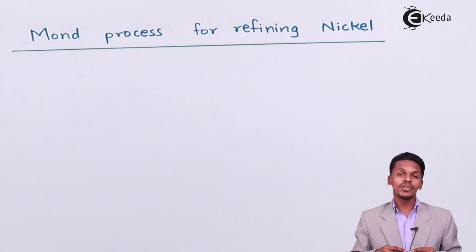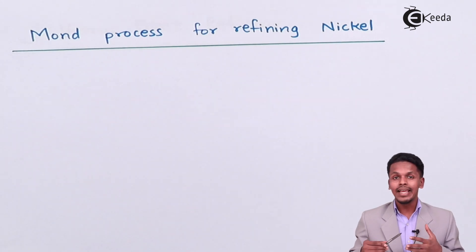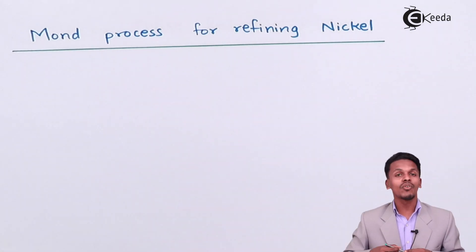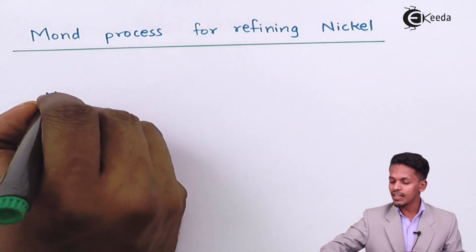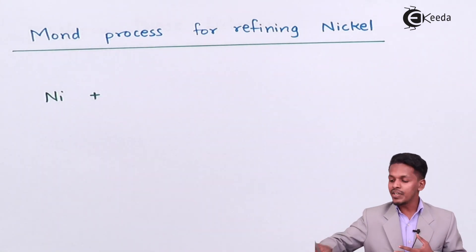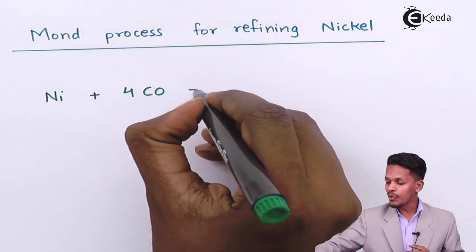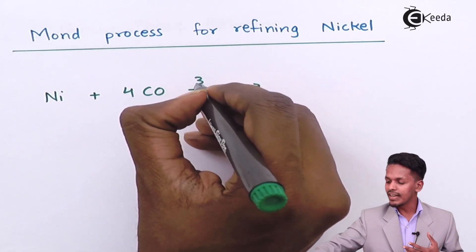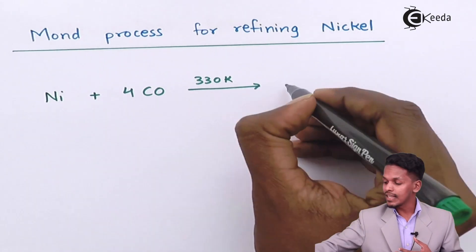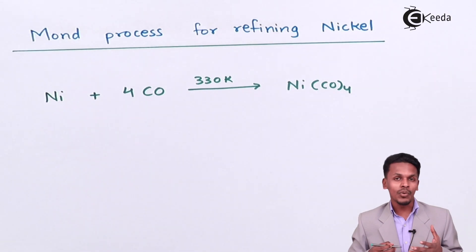First, let me introduce Mond's process for refining nickel. In this case, we consider impure nickel which is treated with 4 moles of carbon monoxide. At a temperature of around 330 Kelvin, a volatile substance is formed — Ni(CO)₄, which is also known as tetracarbonyl nickel. This is in the gaseous phase, as it is a volatile substance.